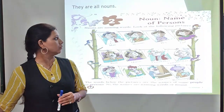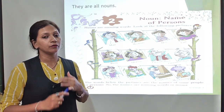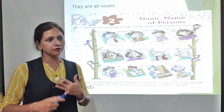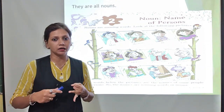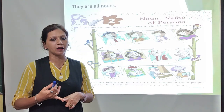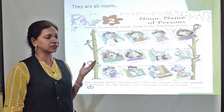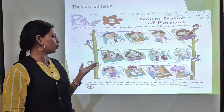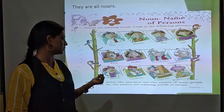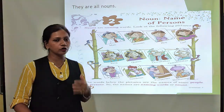Now first we will look at persons. Examples of persons include: a boy, girl, man, woman, grandma, grandpa, father. There are more examples: king, queen, grandfather, grandmother, doctor, gardener, carpenter, or worshiper.